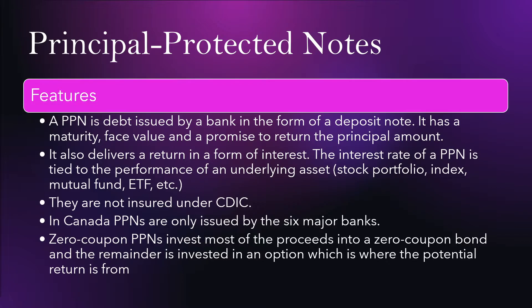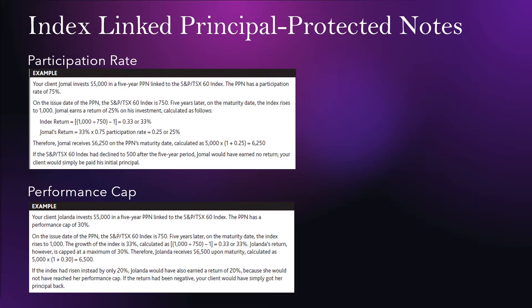PPNs are not insured under the CDIC. In Canada, PPNs are only issued by the six major banks. Zero-coupon PPNs invest most of the proceeds into a zero-coupon bond and the remainder is invested in an option where they will get the potential return from. There are two different variations of this: one that focuses on the participation rate and another which has the performance cap.